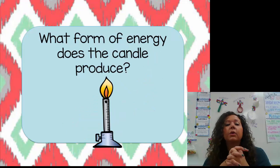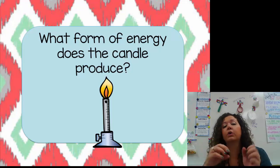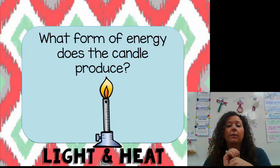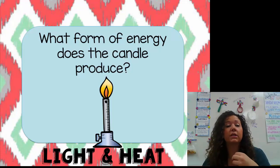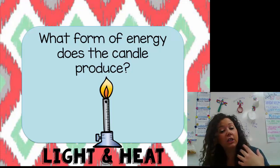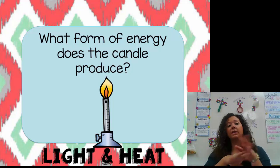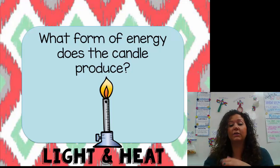Let's practice one more. Here we have a candle. What form of energy does the candle produce? We also have light, but this time there is a second form of energy it's producing, which is heat. Sometimes objects or materials can be producing more than one type of energy. Tomorrow you are going to investigate lots of different items and figure out what forms of energy they are using and producing in everyday life.